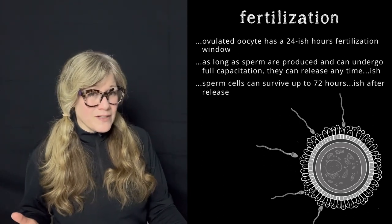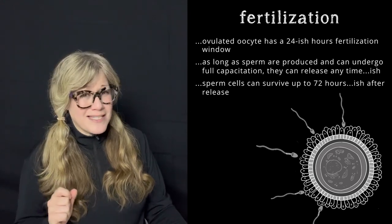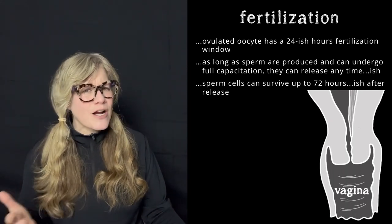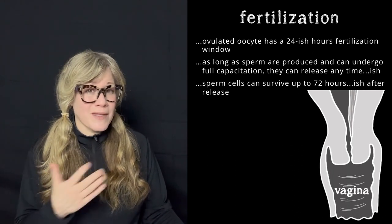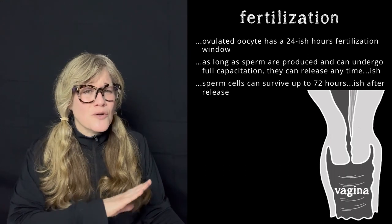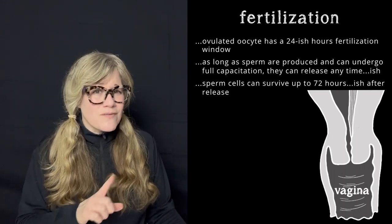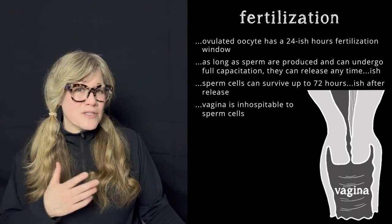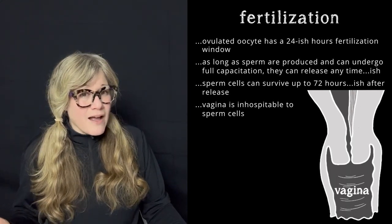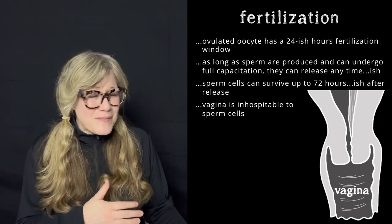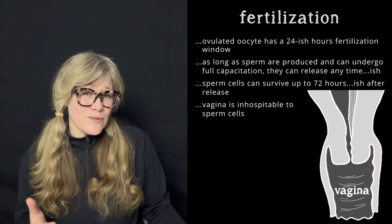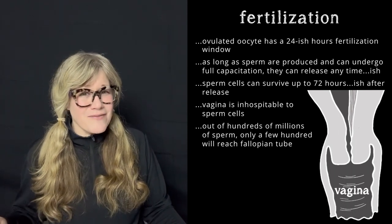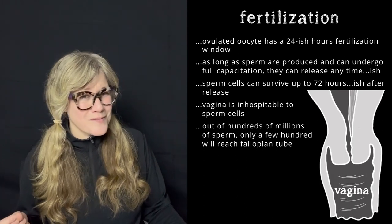Also of note: sperm cells can survive for days after release, which slightly pads the rather narrow oocyte fertilization window — so something to be aware of if you're not trying to get pregnant. Scheduling intimacy even five days before ovulation may not be the most reliable method of contraception. The vagina is an acidic environment, and importantly so, because the vaginal opening is vulnerable to bacteria and pathogens from the outside world. Its antimicrobial defense wants to destroy any foreign invaders — it doesn't discriminate. Out of the maybe hundreds of millions of sperm released, possibly only a few hundred will make it to the oocyte in the fallopian tube, but you only need one.